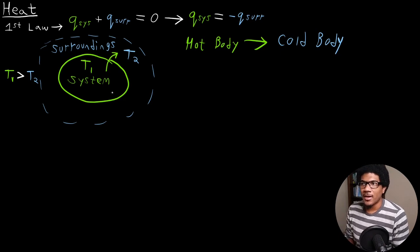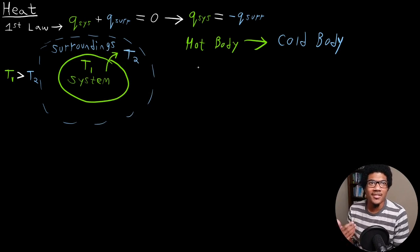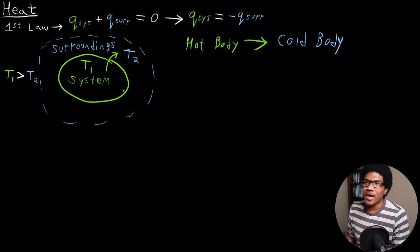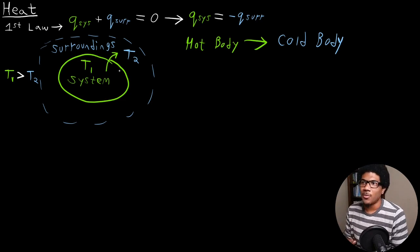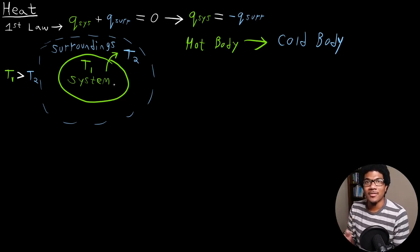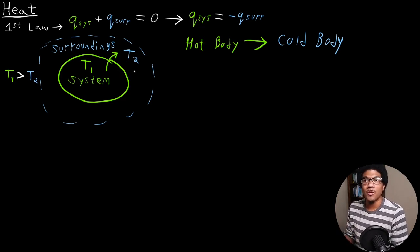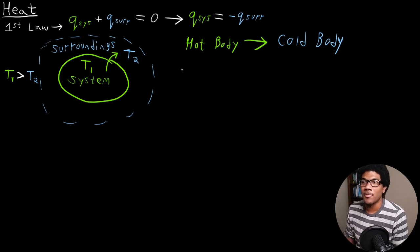This transfer of heat is going to occur until thermal equilibrium is established. You can imagine this system-and-surroundings setup being something like a chemical reaction where the surroundings is some type of water bath. If the system — the chemical reaction — is exothermic, it's releasing heat into the surroundings, and that transfer of heat is going to continue until thermal equilibrium is established.